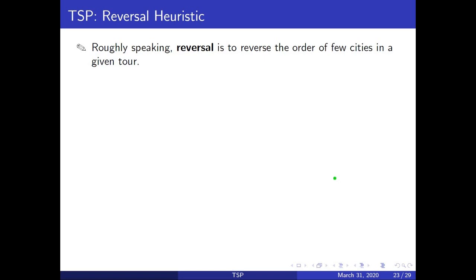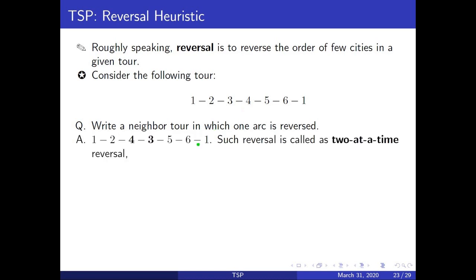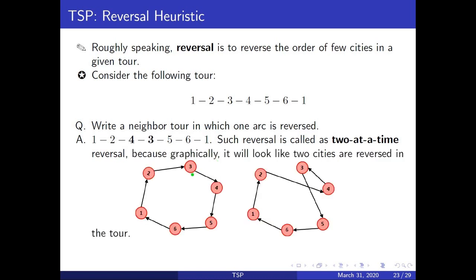Now let us look at the idea of the reversal heuristic. A reversal is nothing but reversing the arcs in the tour. For example, consider this tour. If you look at this tour, the arc 3-4 is reversed and you have 4-3. Such a related tour is called a neighbor tour, and it is a two-at-a-time reversal. Graphically, this is how they look — this is your initial tour, and this is the two-at-a-time reversal tour.